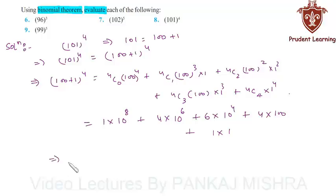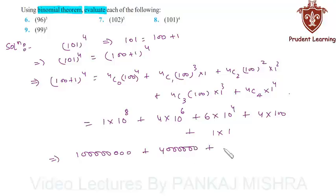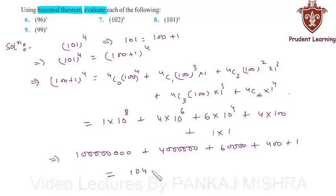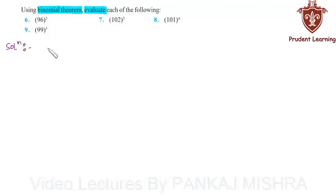This gives us: 1 followed by 8 zeros, plus 4 followed by 6 zeros, plus 6 followed by 4 zeros, plus 400, plus 1. When you add all these quantities you will end up getting 104,060,401. So this is the value of 101 to the power of 4.